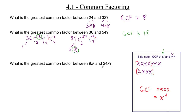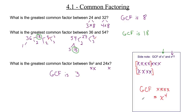Back to the question: what is the greatest common factor between 9x² and 24x? For the numbers: 9 doesn't go into 24, but 3 does — 3 times 8 is 24. So the numeric GCF is 3. For the variables: what do x² and x have in common? They both have a single x in common. So the greatest common factor between these two terms is 3x.